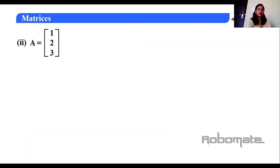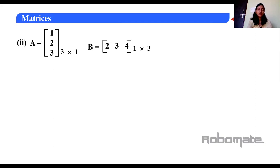Let's take another example. Matrix A has elements 1, 2, 3 — order 3×1. Matrix B has elements 2, 3, 4 — order 1×3. In the last example both matrices had the same order, but here the orders are different. We check: number of columns of the first matrix equals the number of rows of the second matrix — 1 equals 1. So we can multiply, and the resultant matrix will be of order 3×3.